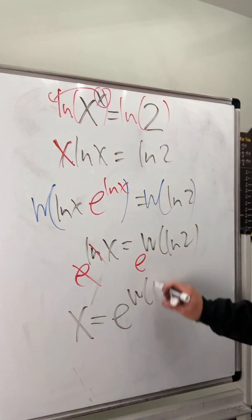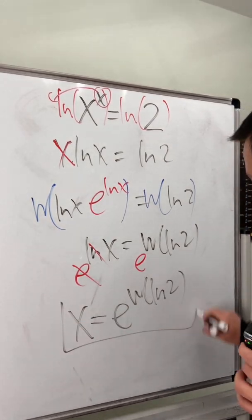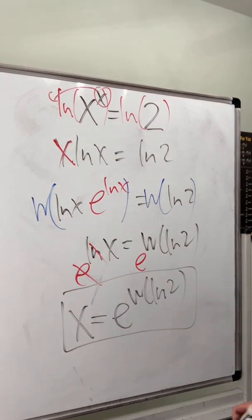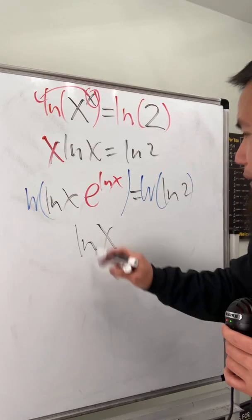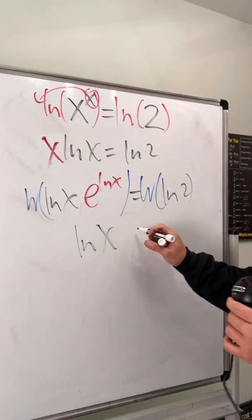Finally, x is equal to e to the W of ln 2. My black marker is done, but that is our answer.